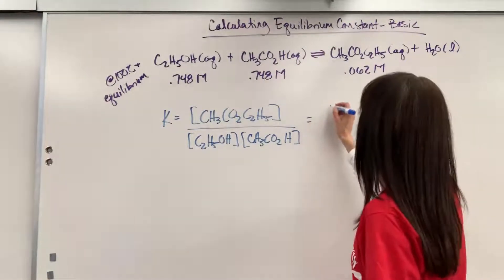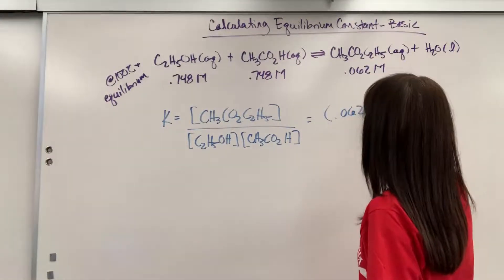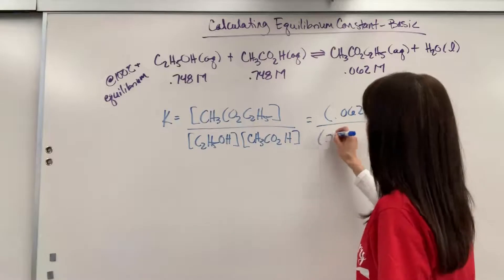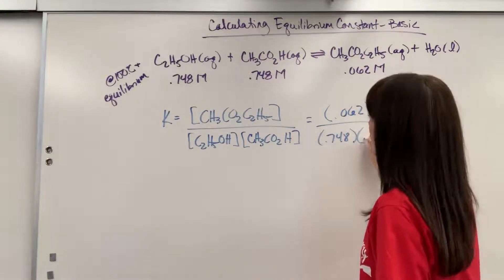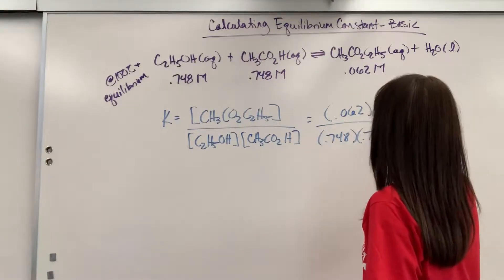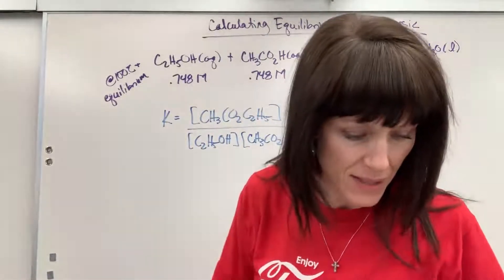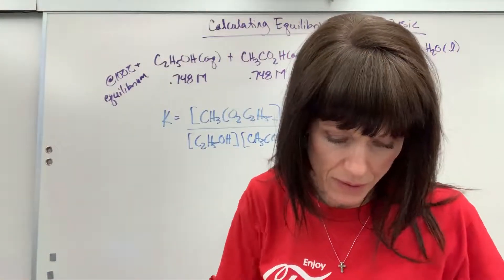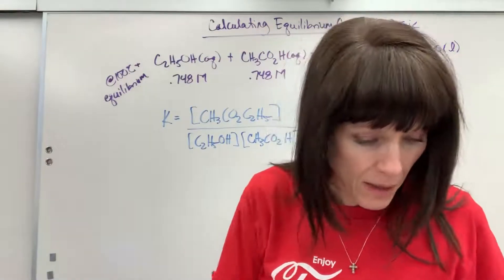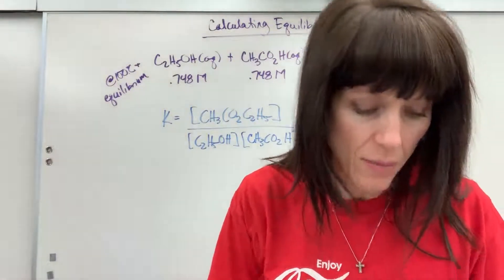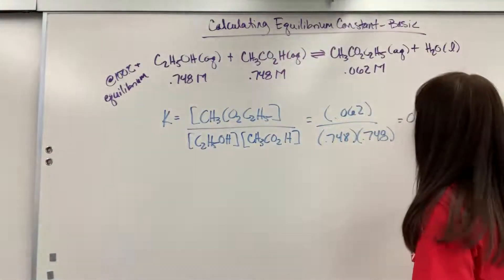Okay, so let's go ahead and plug in. And we're going to have 0.062 molar divided by 0.748 times 0.748. And when we do that math, let's see what our K value is. K is going to be 0.11.